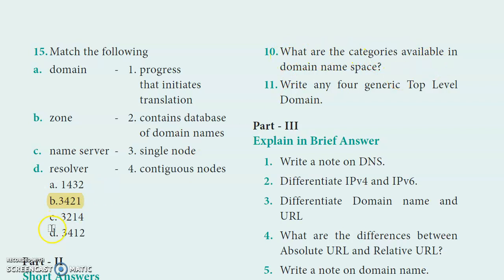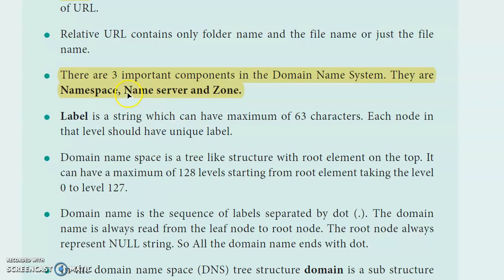What are the categories available in domain namespace? There are three important components in the Domain Name System: namespace, name server, and zone.